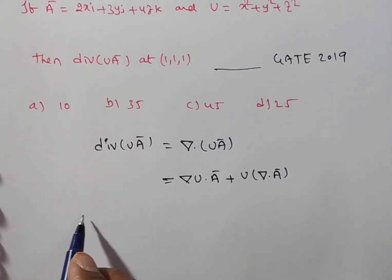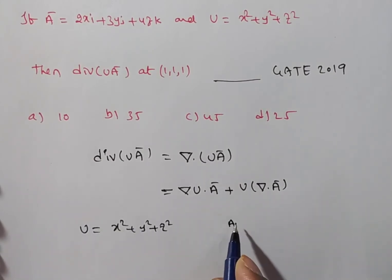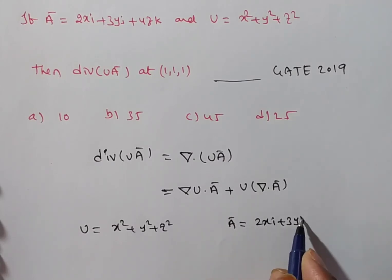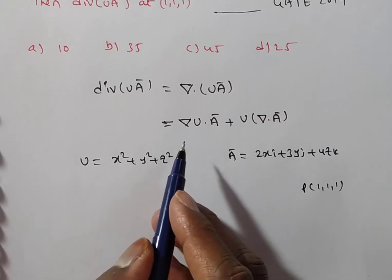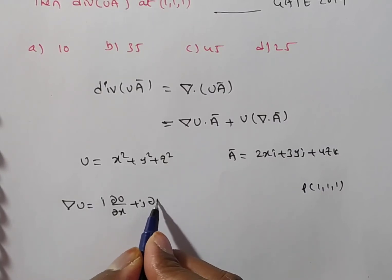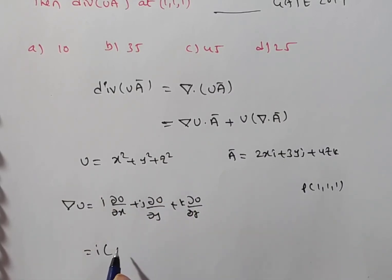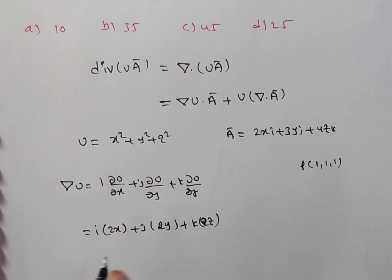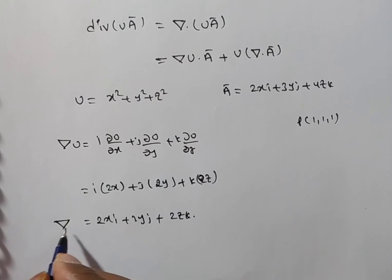Now, first I am doing del u. What is they are given u? U is equal to x square plus y square plus z square. And, also I am writing a bar. A bar is equal to 2xi plus 3yj plus 4zk. And, the point p also I am writing, 1 comma 1 comma 1. Now, you need to find out del u. Del u is nothing but i into del u by del x plus j into del u by del y plus k into del u by del z. Now, with respect to x, then what you are getting? 2x plus j into with respect to y means 2y plus k into u differentiate with respect to z is 2z. So, simply you can say 2xi plus 2yj plus 2zk. This is del u value.